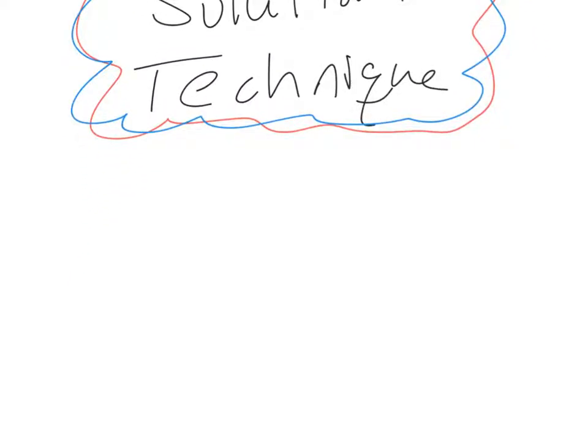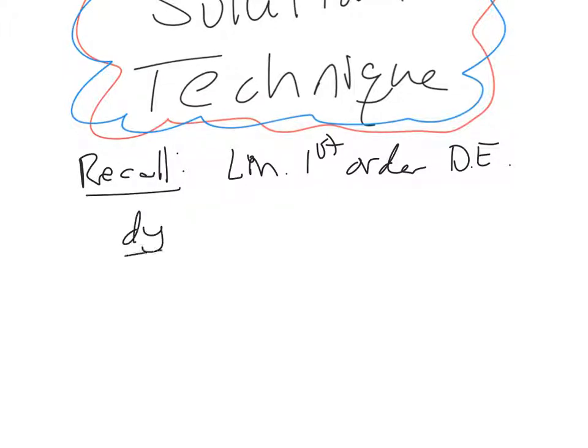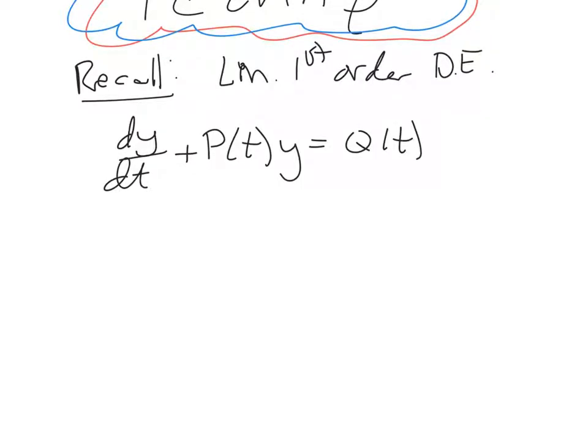So recall first of all every linear differential equation, so linear first order differential equation can be written in the form dy/dt plus some function of t times y equals some function of t. Right, so every first order linear differential equation can be written this way. Now you might need to do some algebra to get there. So let's just break this down piece by piece.